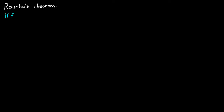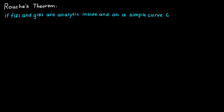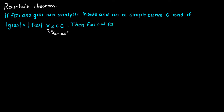Rouché's theorem tells us that if we have two functions f and g, which are both analytic inside and on a simple curve C, and if the absolute value of g is always smaller than the absolute value of f on this curve C, then we know that the functions f and f plus g will have the same number of zeros inside of C.